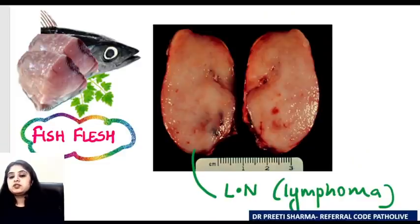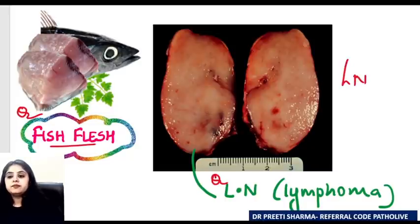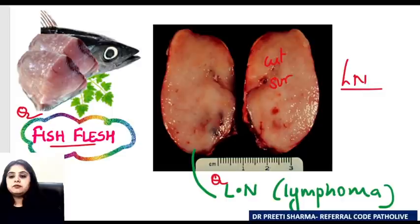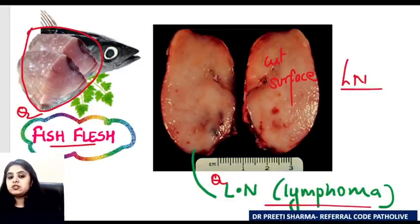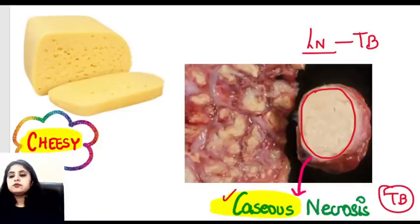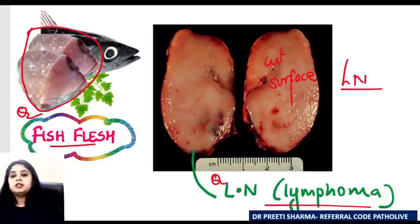Which tumor shows fish flesh appearance? This is a lymph node cut with a scalpel, and the cut surface looks like fish flesh. This is seen in lymphoma cases — when lymphoma involves a lymph node, on cutting it you get a fish flesh appearance. To summarize: if you cut a lymph node and get cheesy appearance it's caseous necrosis TB; if you get fish flesh appearance it's probably lymphoma, confirmed with histological slides.